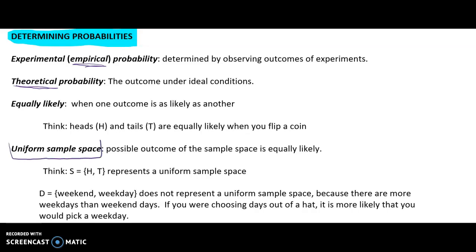A uniform sample space is one where all possible outcomes are equally likely. For the sample space of heads and tails, that's a uniform sample space — it's a 50/50 shot for either. The probability of heads is one half and the probability of tails is one half. However, the sample space of {weekend, weekday} does not represent a uniform sample space because there are more weekdays than weekends.